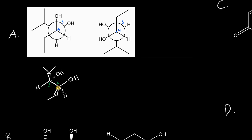At carbon 4 we look at the four different substituents. The OH directly bound to carbon 4 takes first priority. We then find priorities 2 and 3: the ethyl group is purely hydrocarbon, but moving outwards to the left we find a carbon bound to an oxygen, so that takes second priority. Drawing an arrow from 1 to 2 to 3, we're going counterclockwise, so it's S at carbon 4.